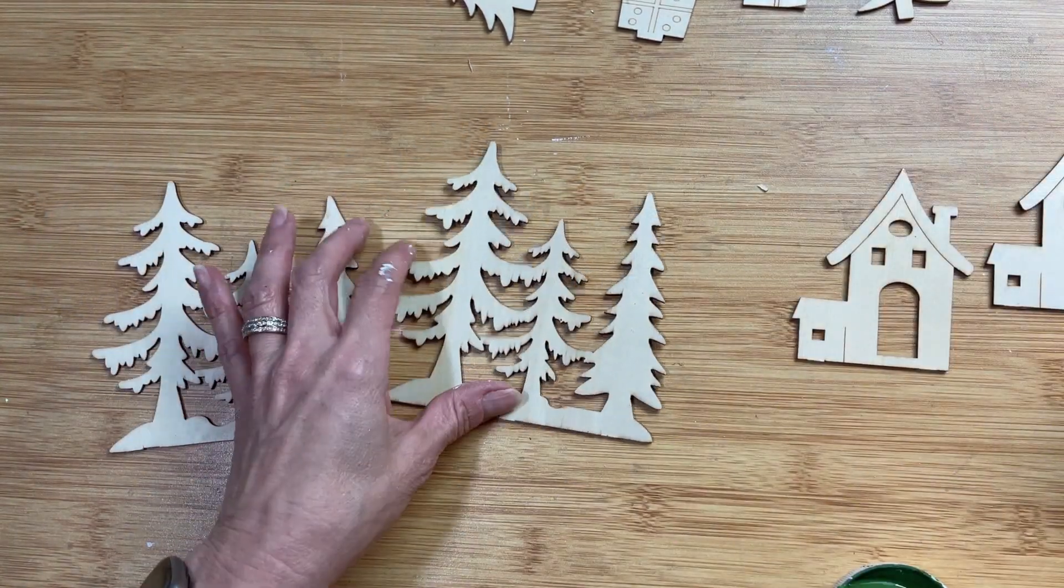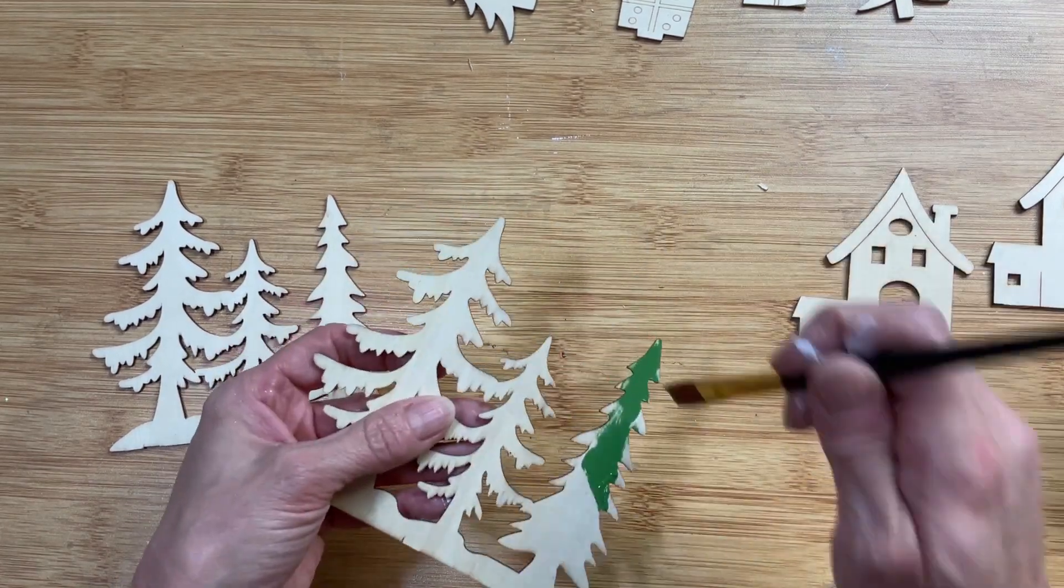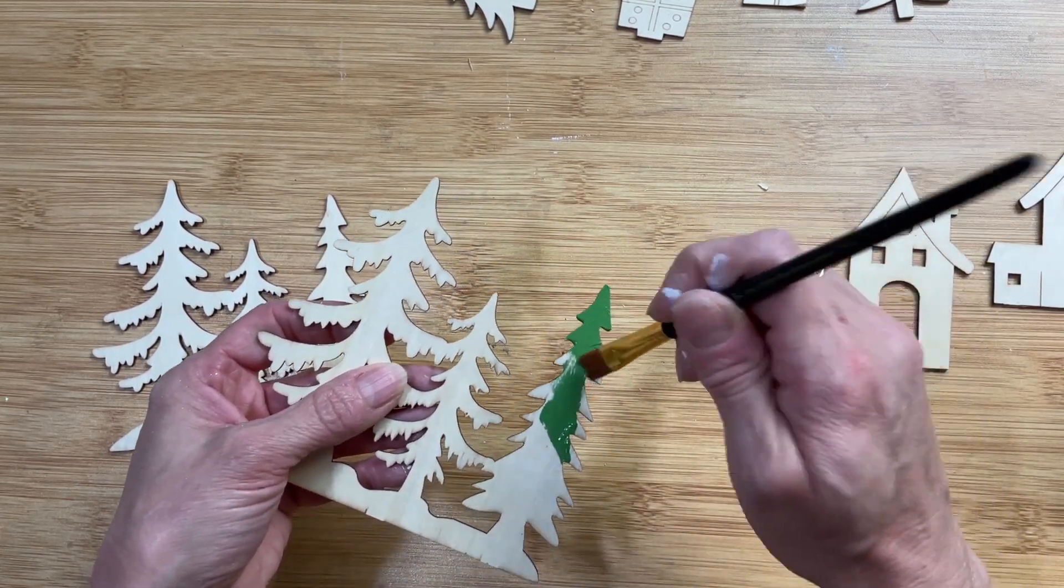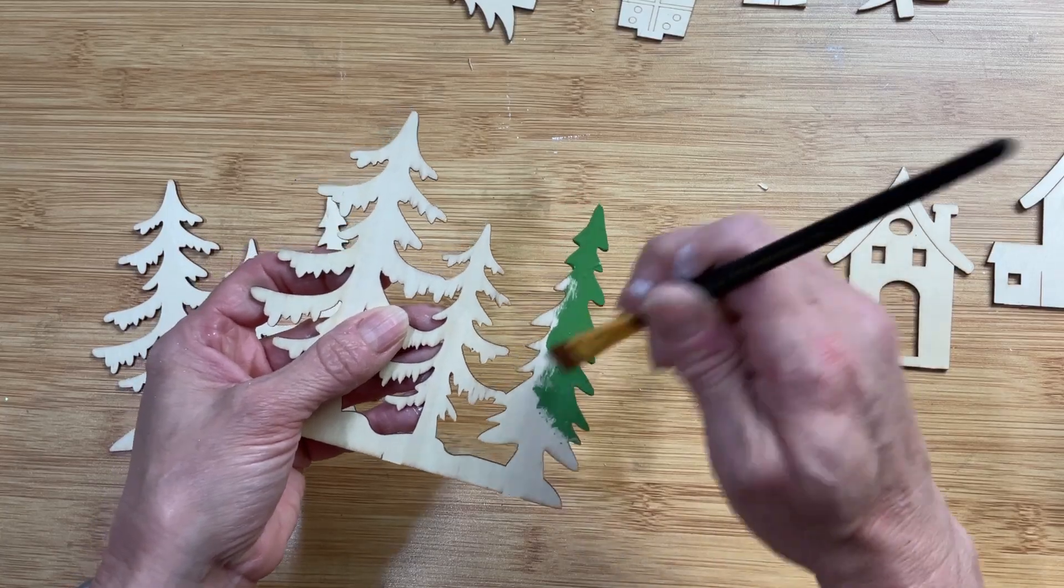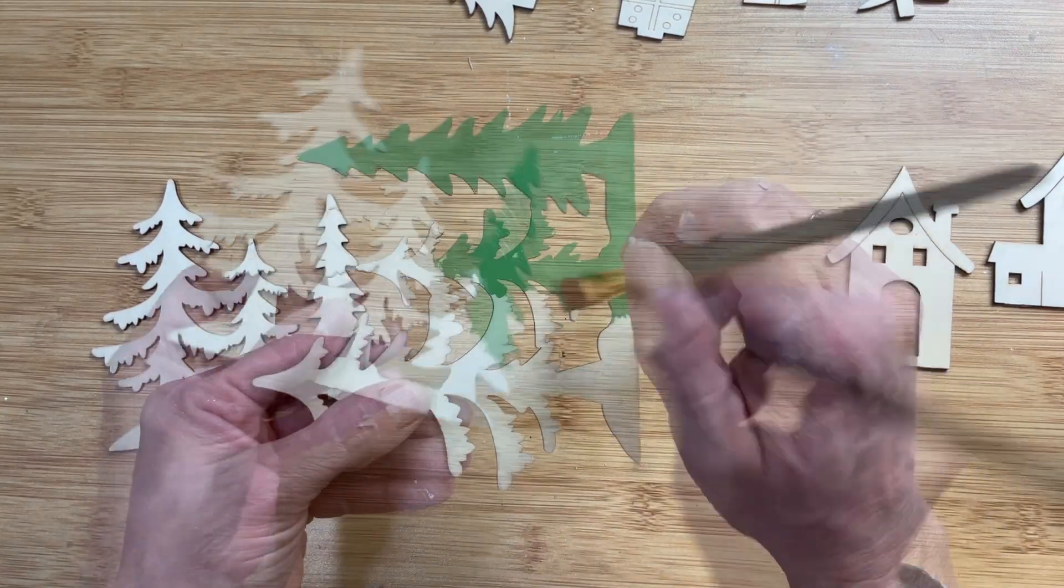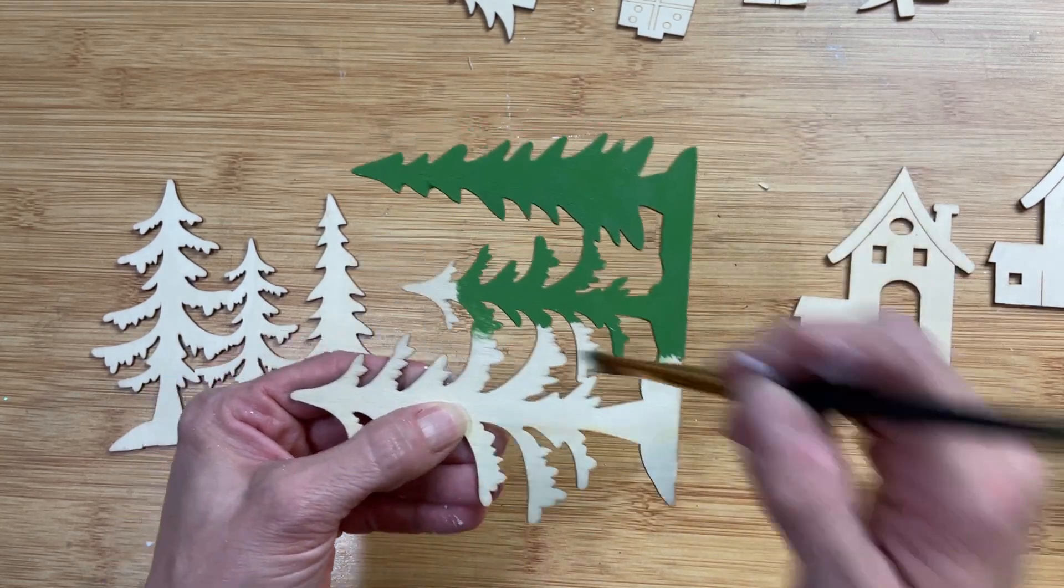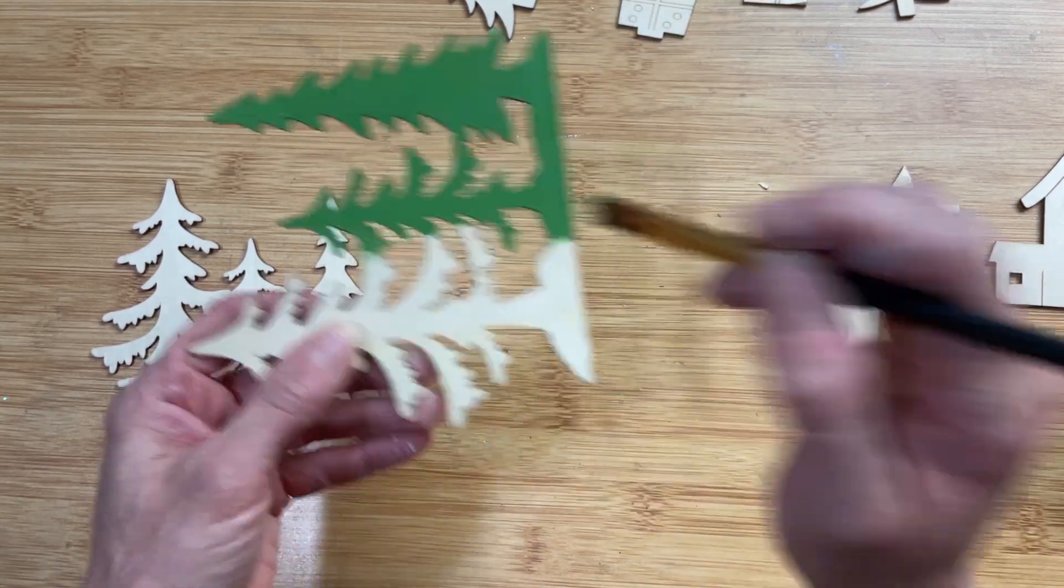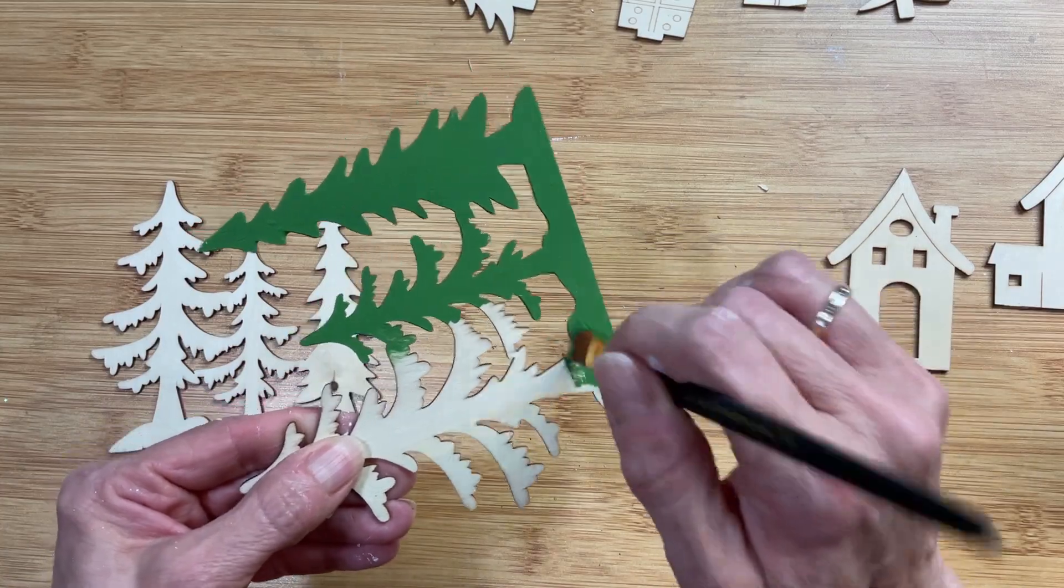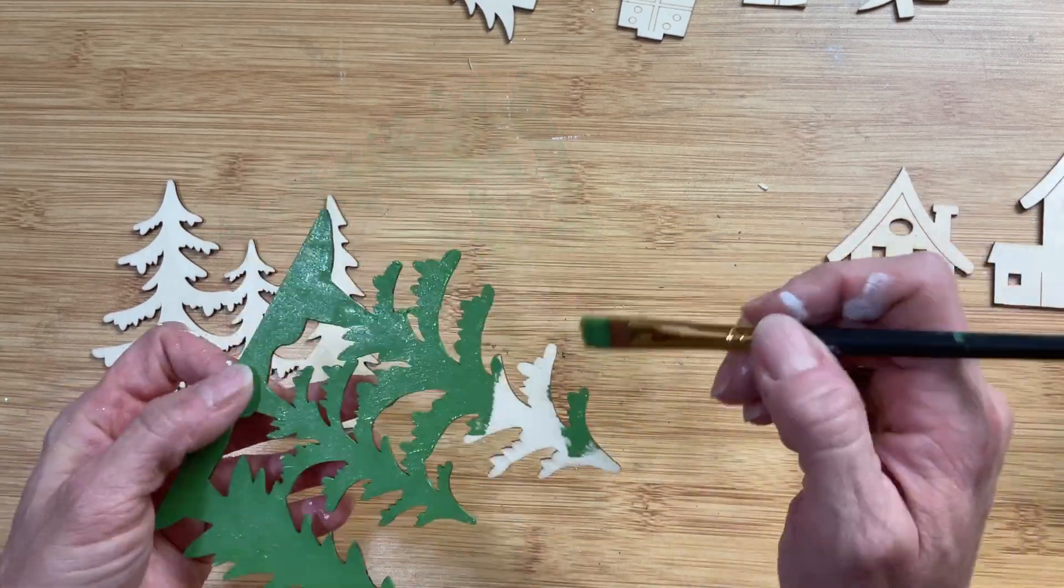So I'm going to use Waverly fern chalk paint. I love this color and I'm just going to quickly give my tree trios here a coat on the front and the back because they will stick up on the other side of the box you'll be able to see both sides so I'm going to paint both sides with fern green.